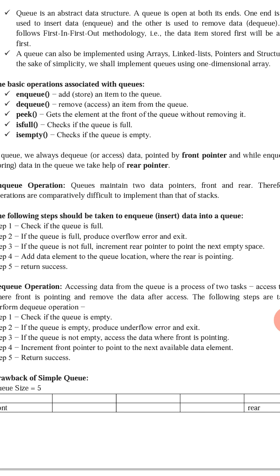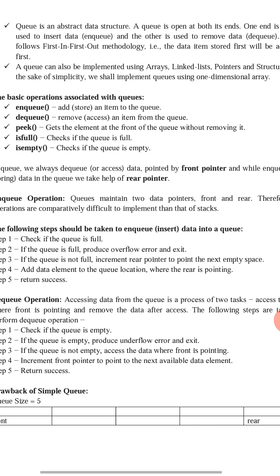The possible operations we can perform on a queue using a static array are: enqueue — add an item to the queue; dequeue — remove an item from the queue; peek — get the element at the front without removing it; isFull — check whether the queue is full; and isEmpty — check whether the queue is empty or has elements.